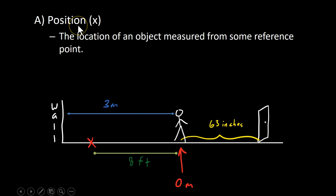Our very first term is known as position. Position, as you might have guessed, is the location of an object, where an object is located. But it goes a little farther than that because position is a measurement and it's measured from some reference point. So I have an example here of a person, of an object, with several different ways to measure to represent their position. For example,